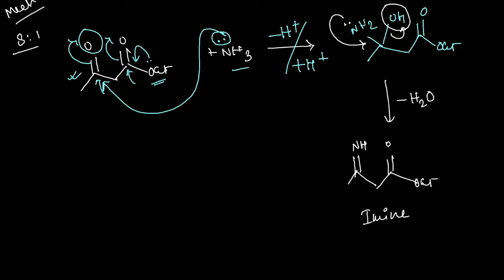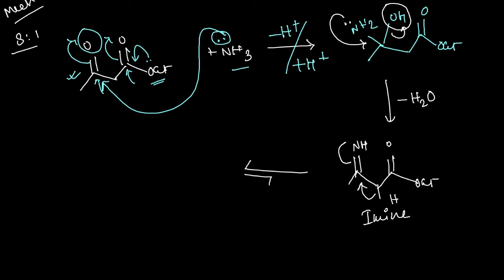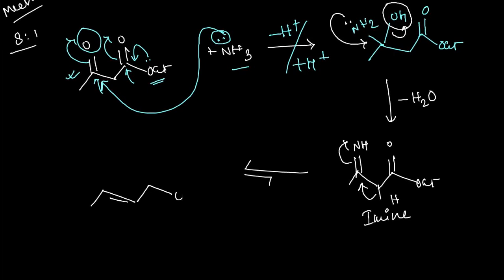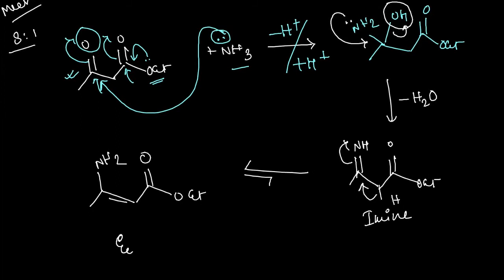After the imine forms, enamine tautomerism occurs due to the presence of the alpha hydrogen — alpha with respect to the ester group or the amine group. So we get the enamine. The first step involves imine-enamine tautomerism to produce the enamine.